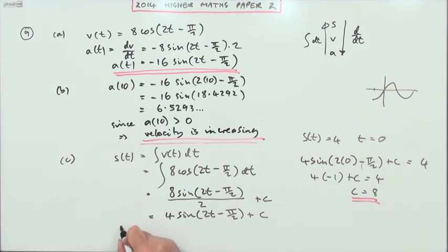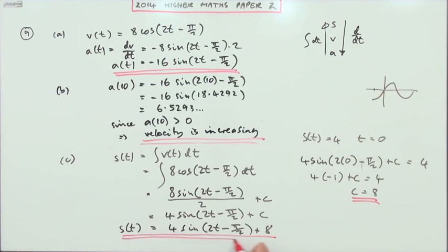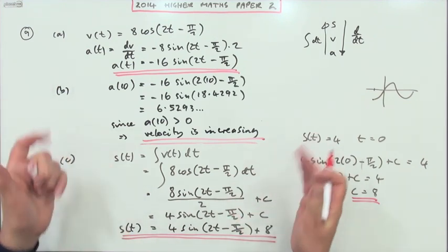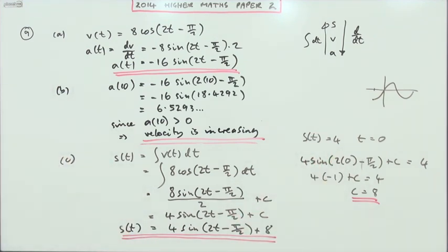So I can finish this off then. S(t) equals 4 sin(2t - π/2) + 8. Finishing question 9 for 8 marks altogether.